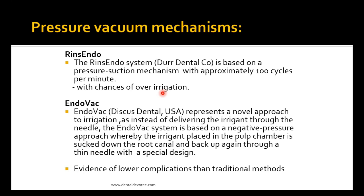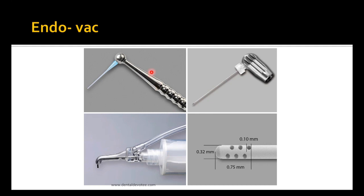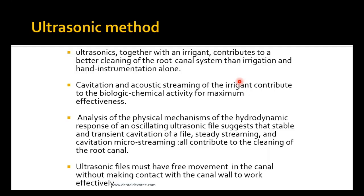The RinsEndo system is based on a pressure-vacuum mechanism with approximately 100 cycles per minute, though there is a risk of over-irrigation. EndoVac is a novel approach: instead of delivering irrigant through the needle, it is based on a negative pressure approach whereby irrigant placed in the pulp chamber is sucked down the root canal and back up through a thin needle with a special design, with evidence of lower complication rates.